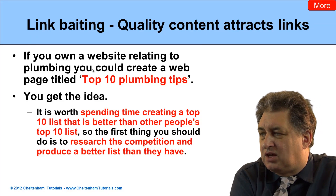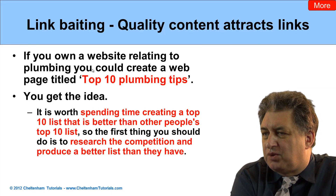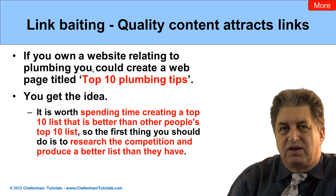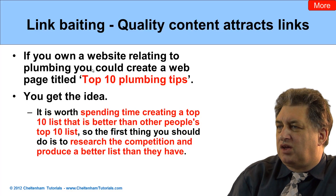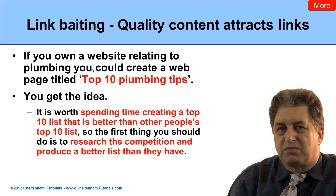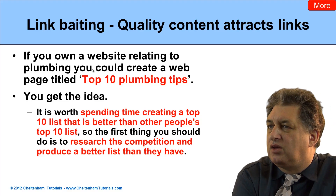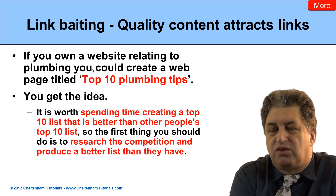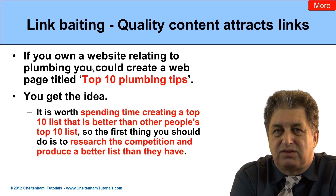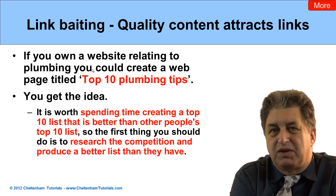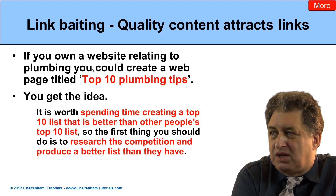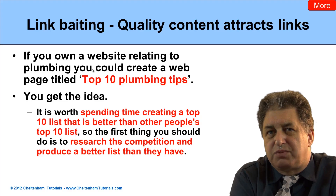If you take the example of a plumbing site — 'Top 10 Plumbing Tips' — make the appeal of your top 10 lists or quality articles as broad as possible. Sometimes make it very specific: if it's broad, it's appealing to more people; if it's very specific, you're supplying detailed information that maybe a smaller number of people require, but it's more likely those people are going to link to it. It's worth spending time putting these lists together. Do a little bit of research, see the sort of things out there already, and then just try and do something that's better than what's already out there.